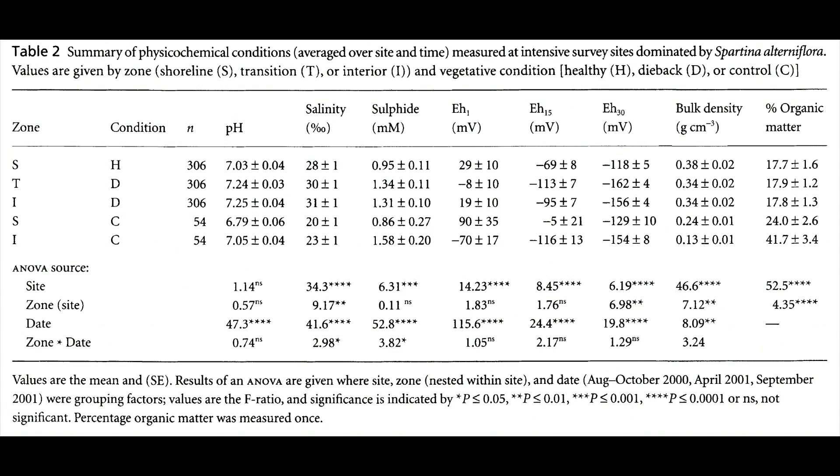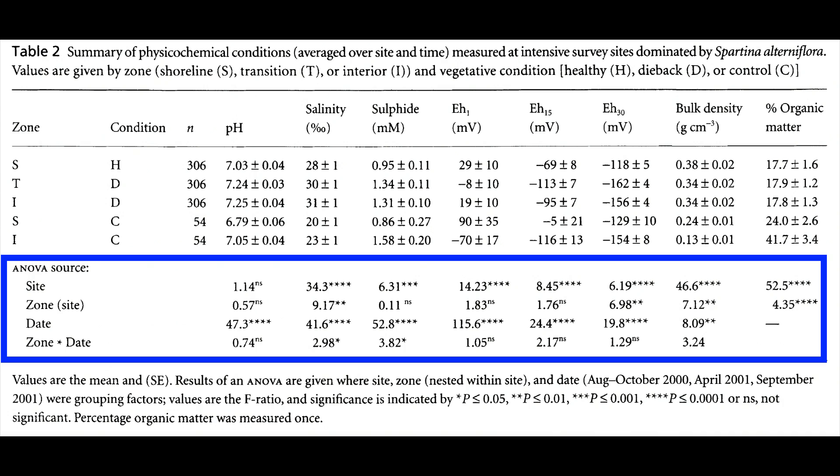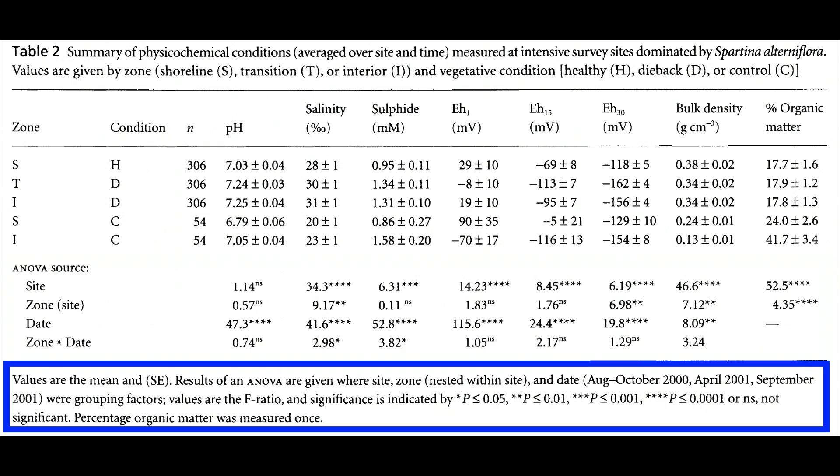The data and tables are summaries such as the mean and standard error. You can see that the mean salinity varied from 20 to 31 parts per thousand across zones and condition. At the bottom is outcome of the statistical test showing the F ratios and significance levels. Below the table is some additional information about the data and statistical tests. This information might also be put in the table title depending on the journal.